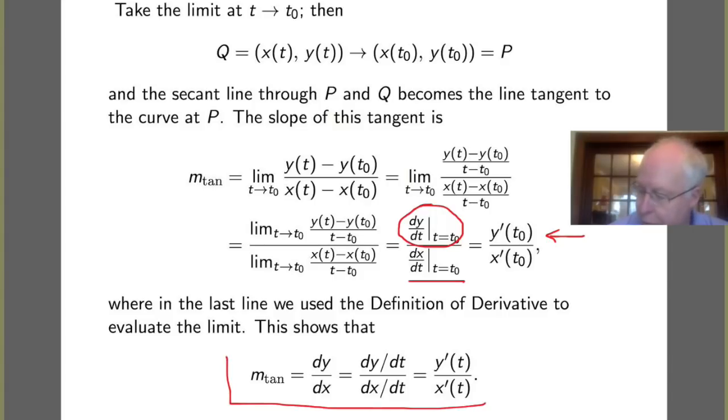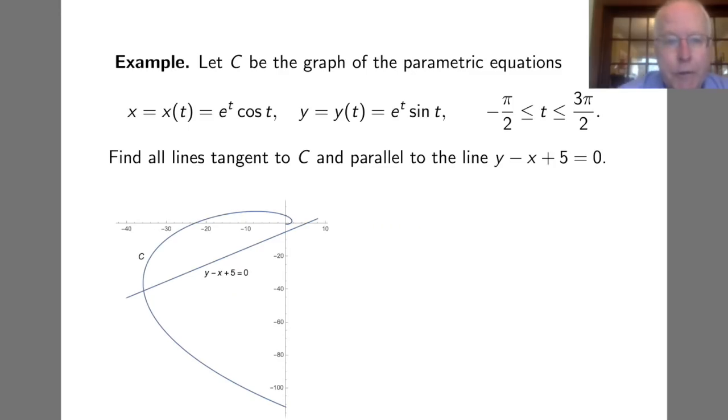We're going to keep in mind this relationship: if we have a Cartesian described curve, the derivative of y—the y coordinate with respect to x, or the slope of the tangent of the curve—is given by y'(t) over x'(t). So we can get the slope from the derivatives of the individual parametric functions. Let's take a look at an example.